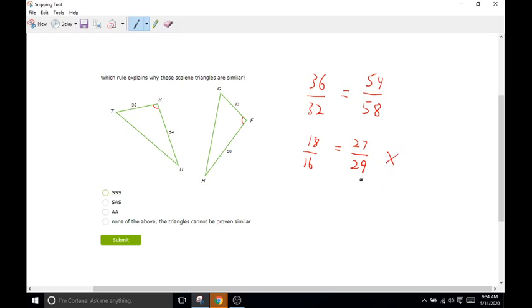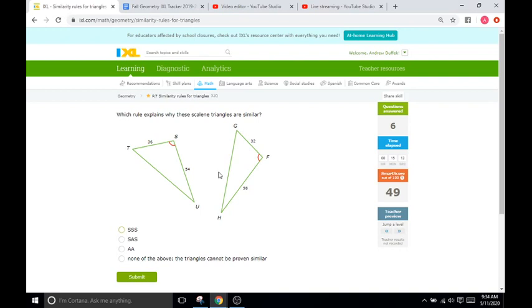And if you wanted to prove this, you could do 18 times 29 equals 16 times 27, and you're not going to come up with the same number. So, what we'll do is 18 times 29, which is 522. And we'll set that equal to 27 times 16, and that is going to be 432. So, again, not the same. So, not similar, which means it's going to be none of the above. They cannot be proven similar. It would be SAS if the sides were proportionate, but since they are not, we cannot say they are similar.